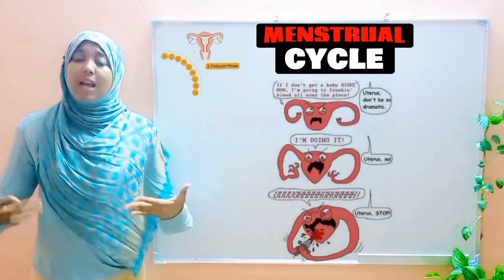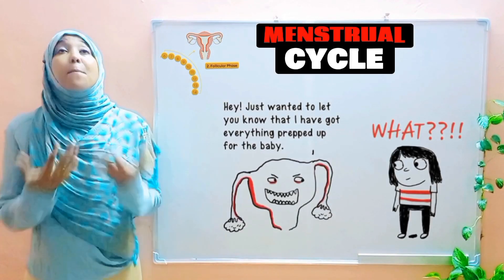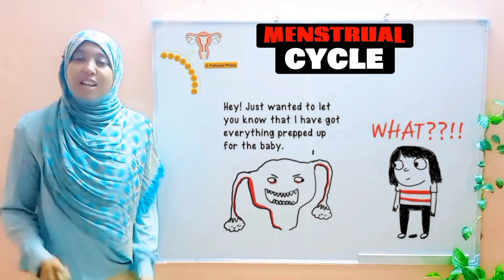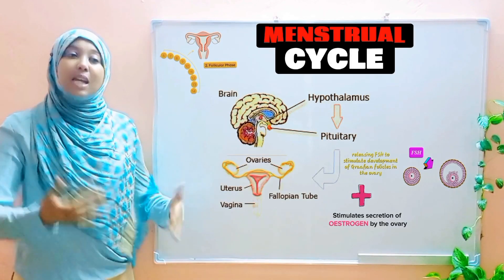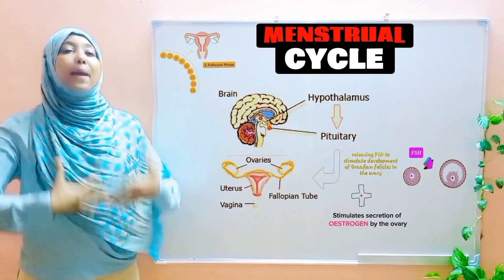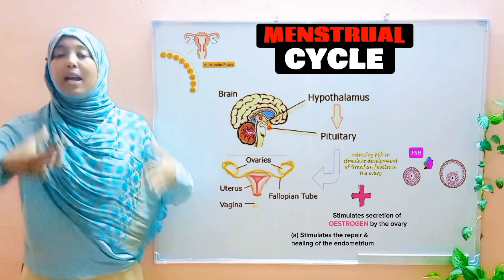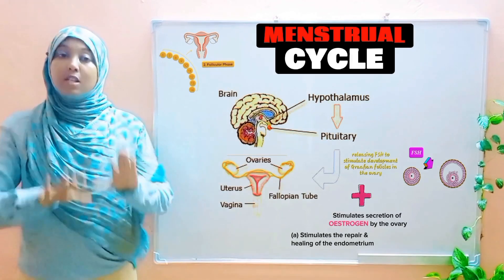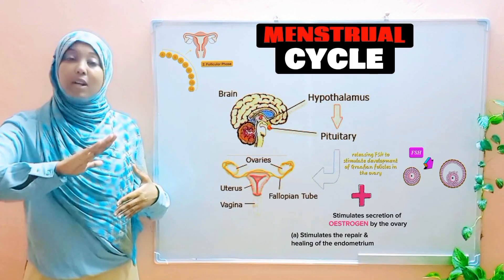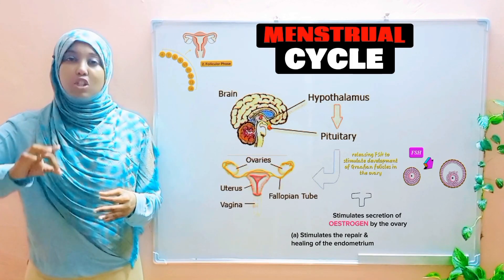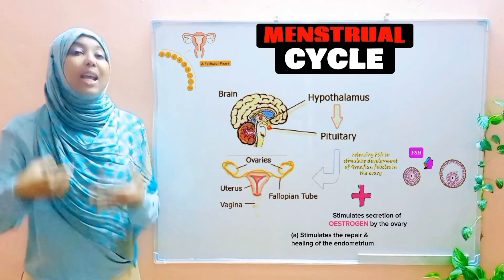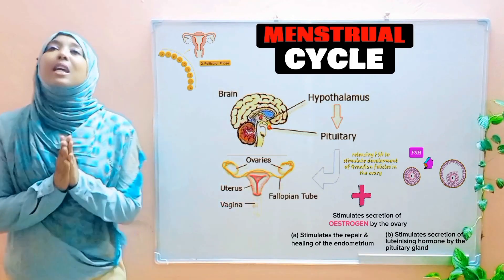Immediately after menstruation, the body begins preparing for implantation again, in case fertilization takes place this cycle. Estrogen repairs and stimulates the healing of the endometrium. Estrogen continues to accumulate, and once it reaches a certain concentration, it stimulates the pituitary gland to release another hormone: the luteinizing hormone.